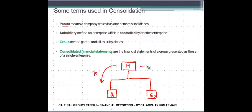The first term is Parent. As I showed you on the previous slide, the structure looks something like this: you will have a holding company, you will have subsidiary 1 and subsidiary 2. This company will own let's say 70% in this and 80% in this.